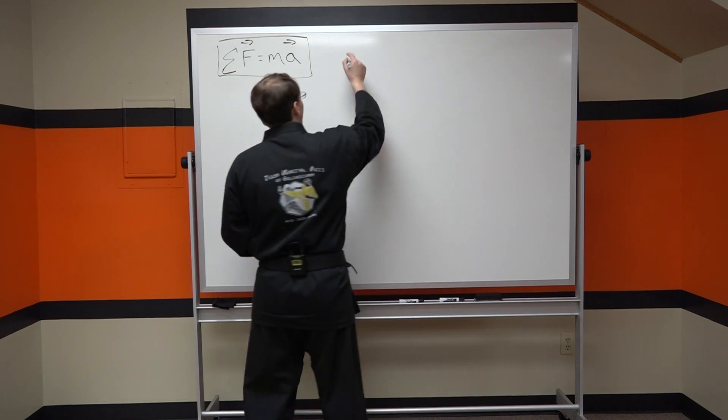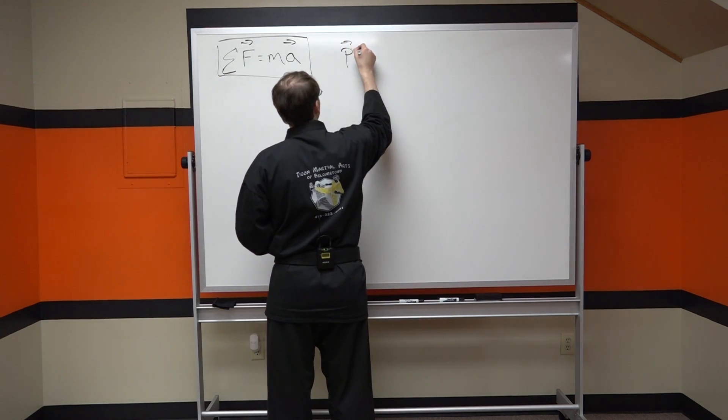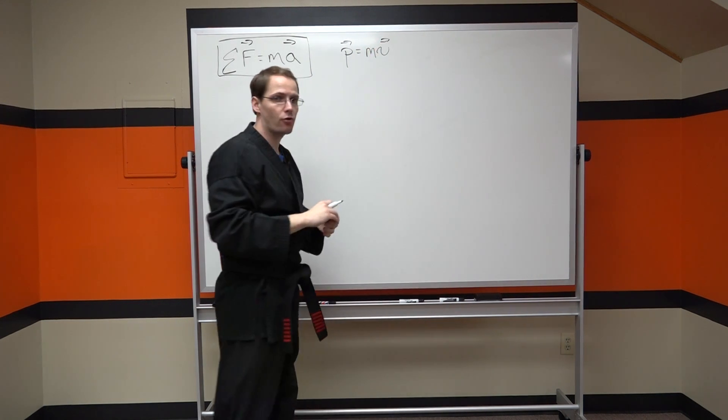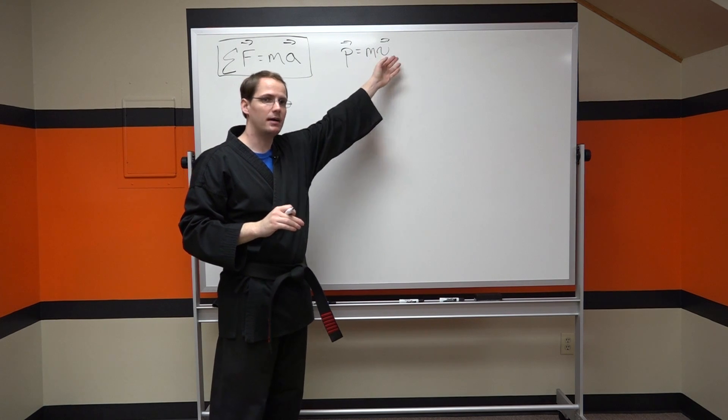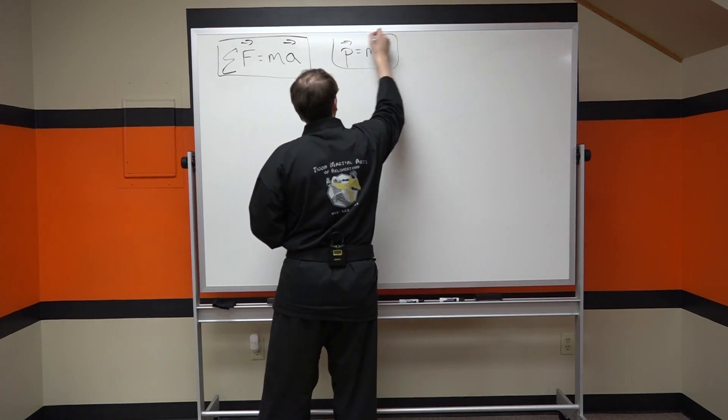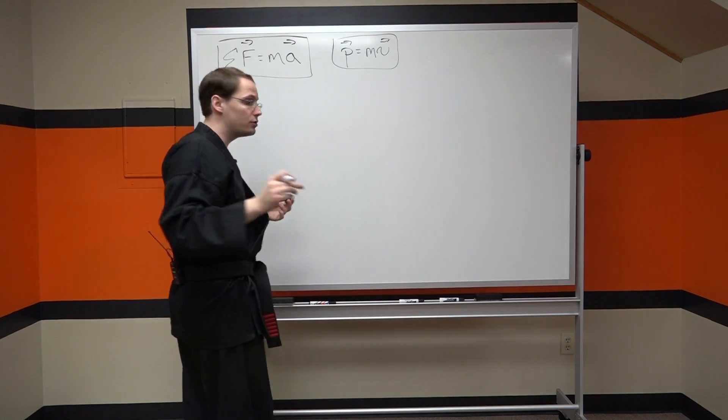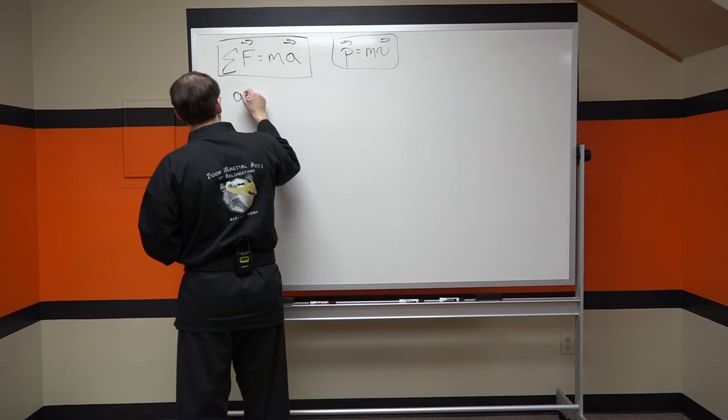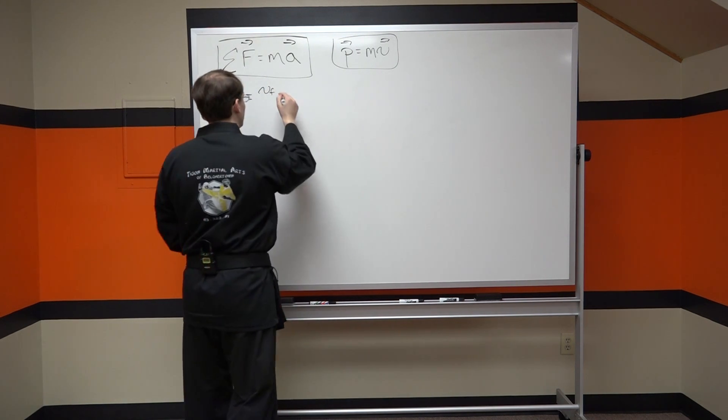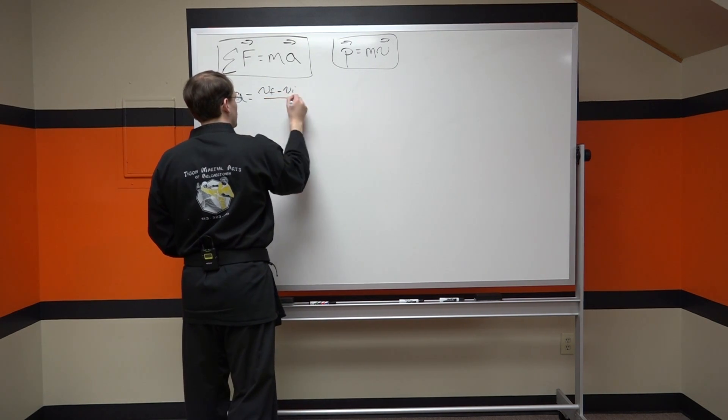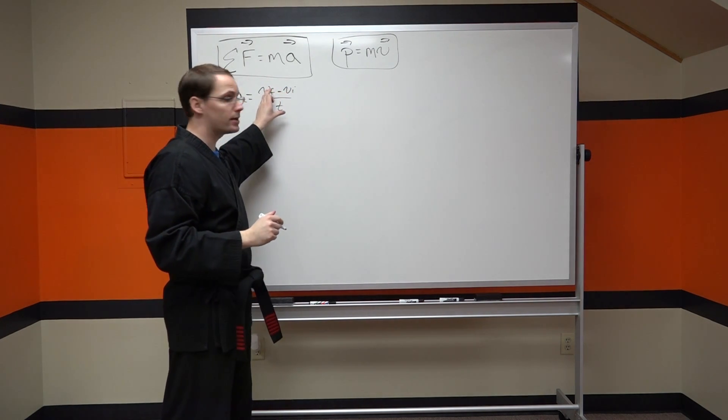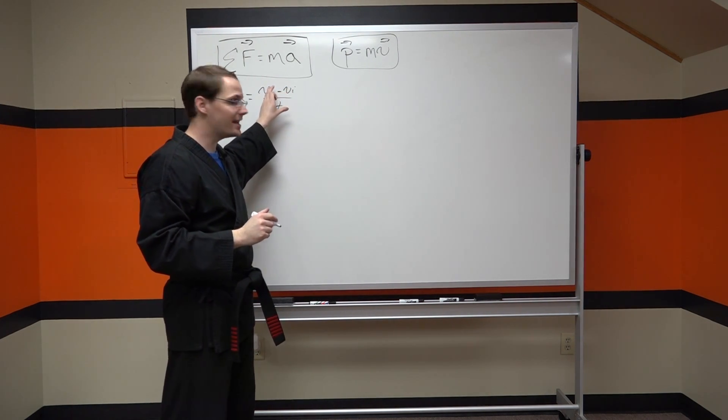So this tells us the force that's acting on the mass. We also looked at last time momentum which is simply determined if you know the mass and the velocity, momentum is the product of the two. So momentum is mass times velocity.